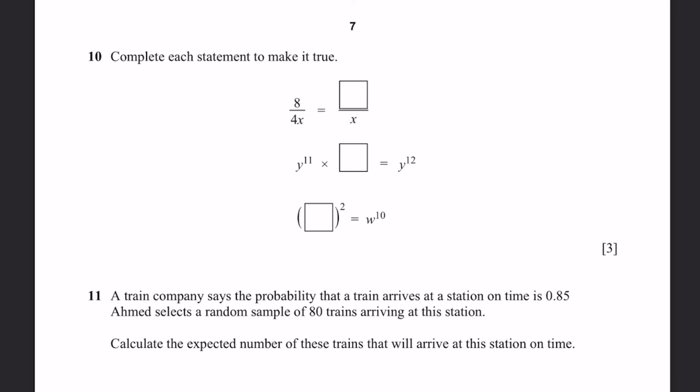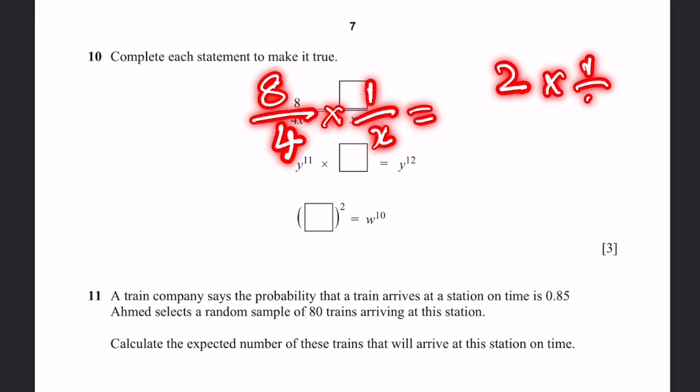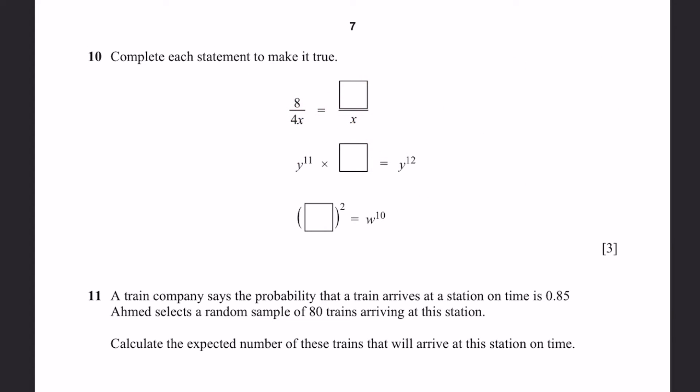Question 10. Complete each statement to make it true. 8 by 4x equals dash by x. We can write this as 8 by 4 times 1 by x. That's going to be 2 times 1 by x, which is 2 by x. Therefore, we write 2 over here. y to the power of 11 times dash equals y to the power of 12. If we multiply y to the power of 11 times something, we get y to the 12. Dividing means we subtract the exponents since they have the same base. That'll be simply y to the power of 12 minus 11, or in other words, simply y.